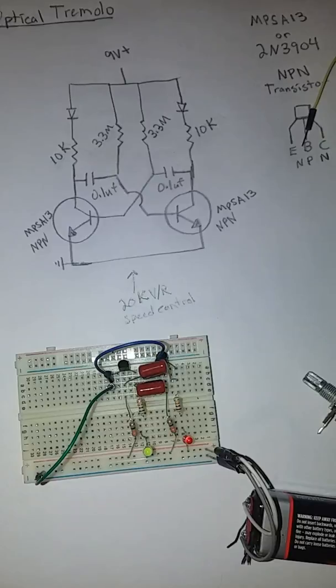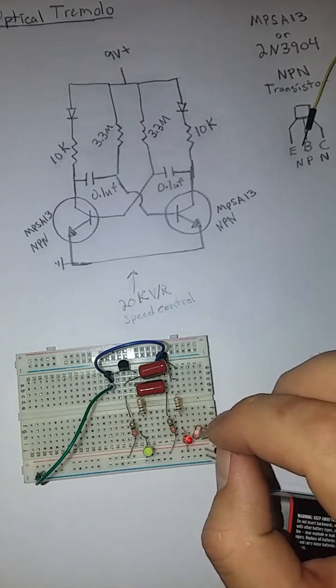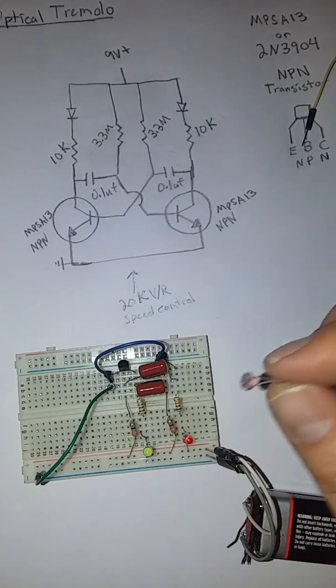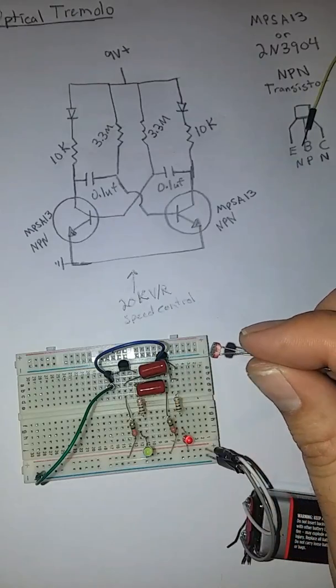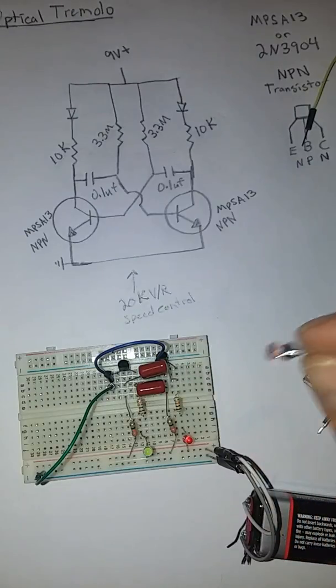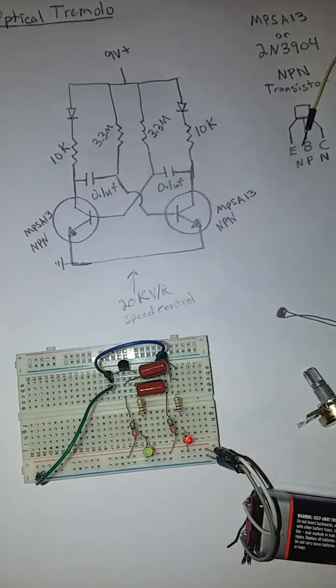Now you'll notice my lights have started flashing back and forth. So we have a flashing light. This is how we're going to achieve our tremolo effect. We're going to take this photo resistor and we're going to butt it up against one of these LEDs. Shrink wrap it up against it so it won't move. And your signal is going to run through this photo resistor. And that's going to cause the tremolo effect.